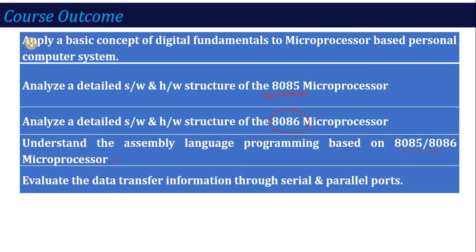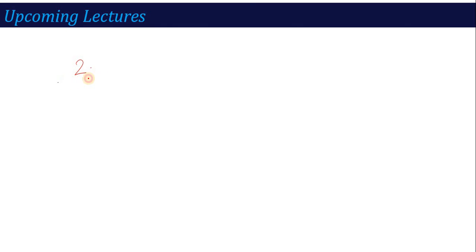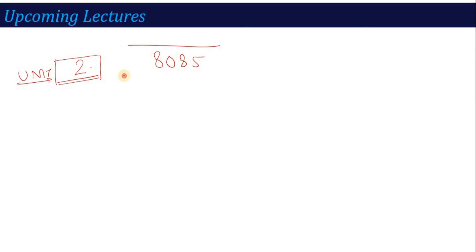These are the expected outcomes after learning this subject. In coming lectures, I will start from unit two, giving you an introduction to the microprocessor and its basic operations, then move into the 8085 microprocessor, since the 8085 is the main foundation for understanding microprocessors. Once you understand it, everything else becomes easier. Stay tuned and see you in the next lecture where we start with the basic introduction of microprocessors. Thank you.